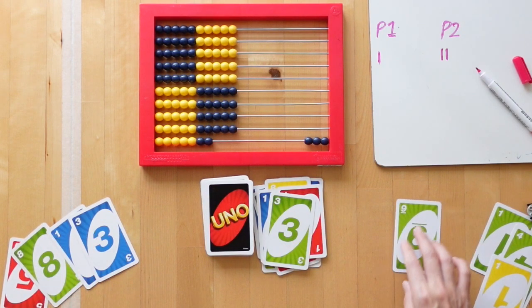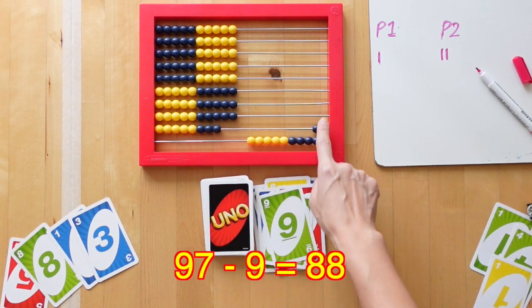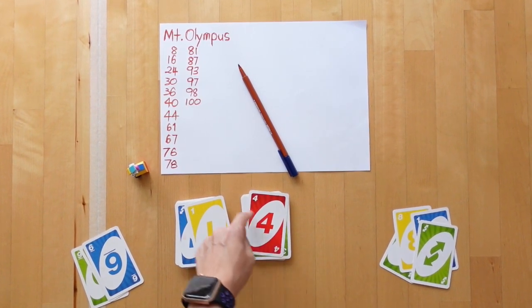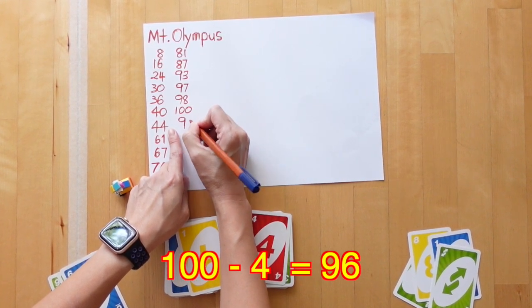a player plays a card from their hand, but now subtracts that number from Mount Olympus. So here I've played a 4 and Mount Olympus goes from 100 to 96.